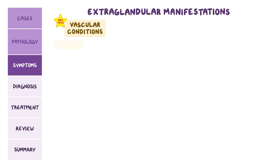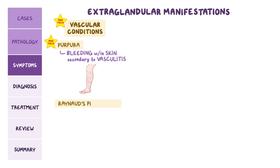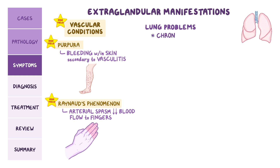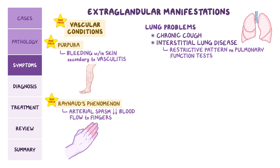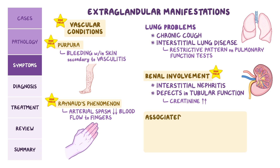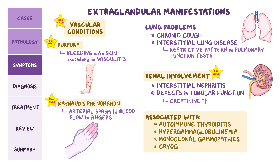There can also be vascular conditions like purpura, which occurs due to bleeding within the skin secondary to vasculitis, or Raynaud's phenomenon, where arterial spasms reduce blood flow to the fingers for a few minutes at a time. The fingers turn white and then blue, often with numbness or pain, and then as blood flow returns, the fingers turn red. Lung problems include a chronic cough as well as interstitial lung disease, which results in a restrictive pattern on pulmonary function tests. Renal involvement can cause interstitial nephritis and defects in tubular function, causing creatinine levels to rise. The condition can also be associated with autoimmune thyroiditis, hypergammaglobulinemia, monoclonal gammopathies, and cryoglobulinemia.